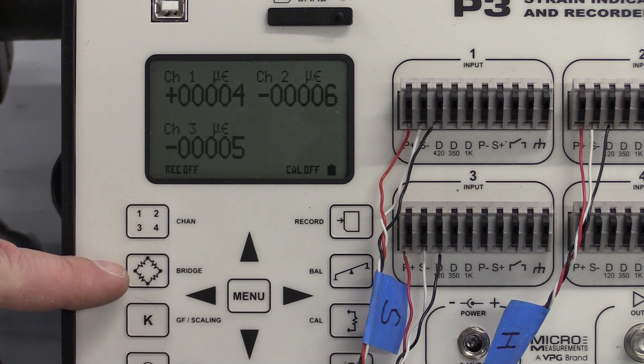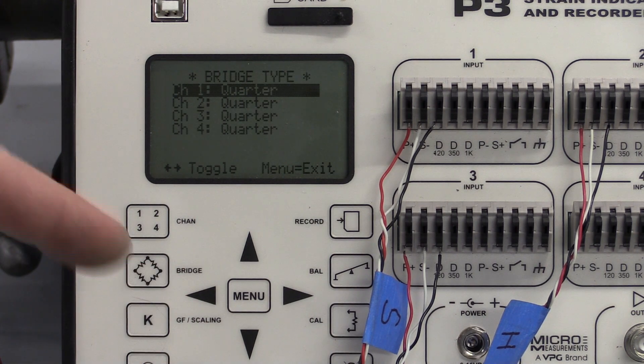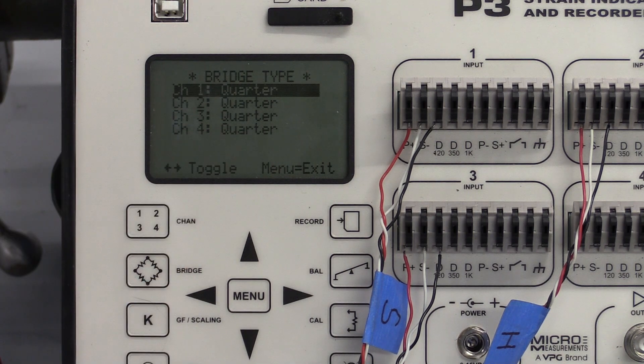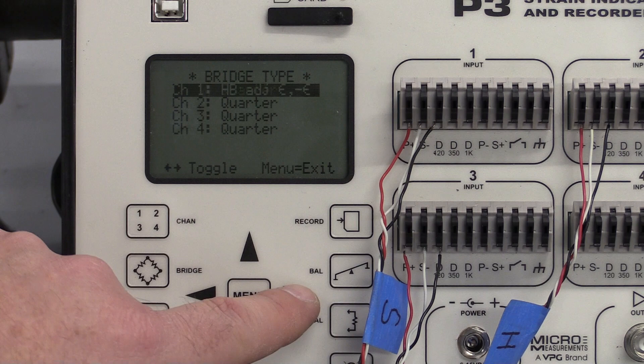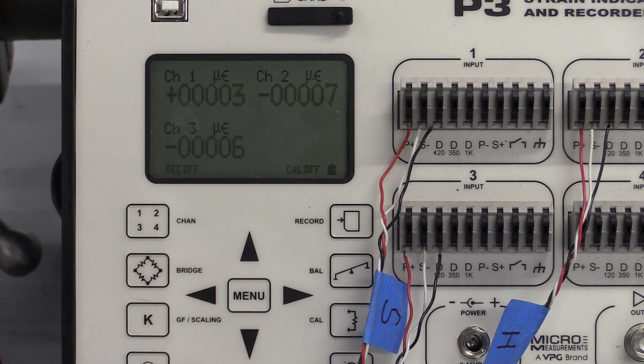The next one we want to hit is bridge. This is going to tell us what kind of connections we're going to have. We're using a quarter bridge for all three channels. Well all four of these currently show quarter. If I didn't I can cursor through the arrows and get it to quarter like I want it to be hooked up. Once they're all quarter I can come in here and finish that out.